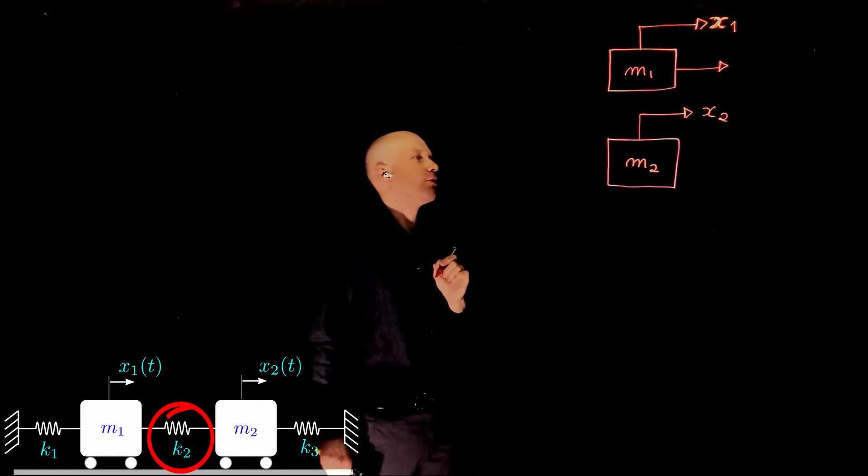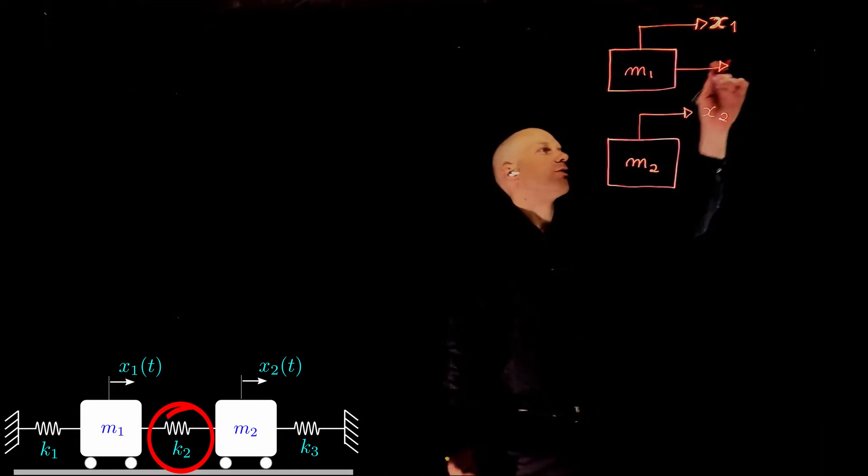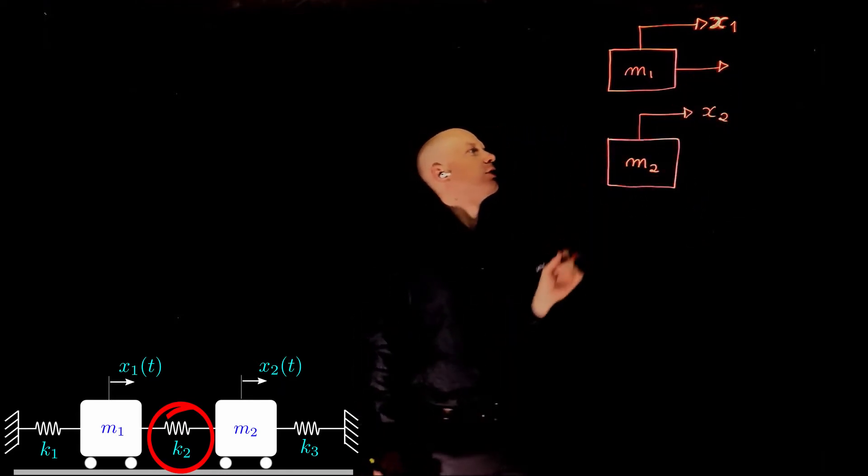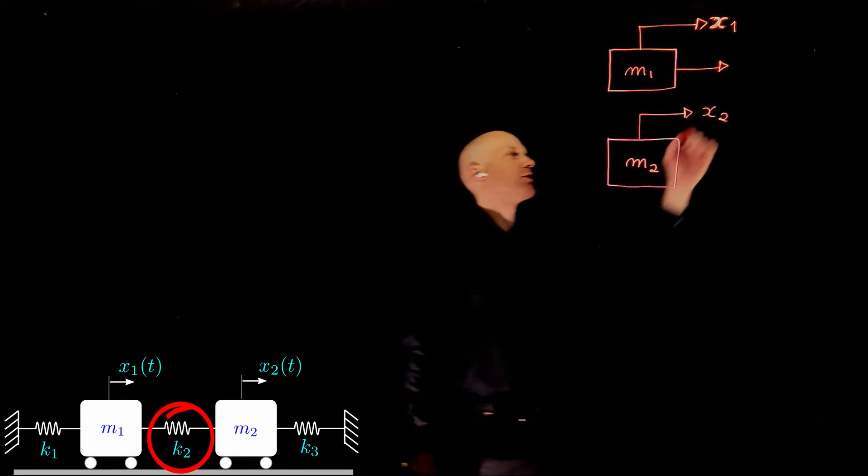And the spring will apply a force towards the right. The magnitude of that force is the relative displacement of the spring times the stiffness k.